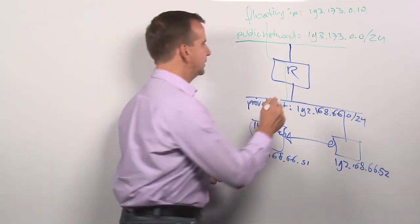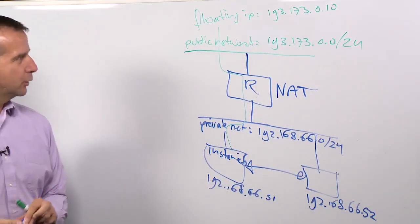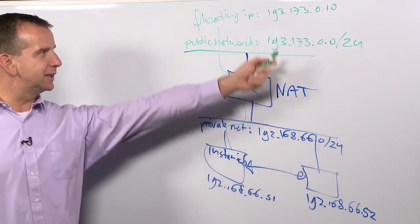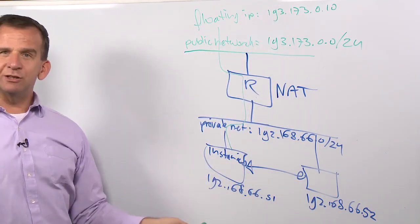And that is because the router is doing network address translation. The network address translation makes sure that the IP address that is used here is translated into the internal IP address.